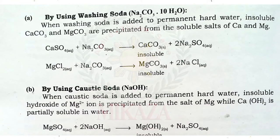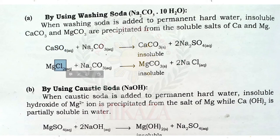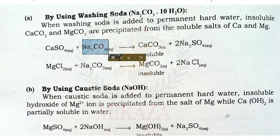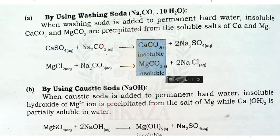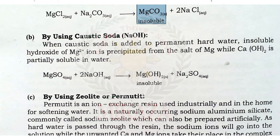When washing soda (sodium carbonate, Na₂CO₃) is added to permanent hard water, insoluble calcium carbonate and magnesium carbonate are precipitated from the soluble salts of calcium and magnesium. Sodium carbonate Na₂CO₃ reacts with calcium sulfate and magnesium chloride, producing insoluble carbonates that settle to the bottom, and then clean water is removed.